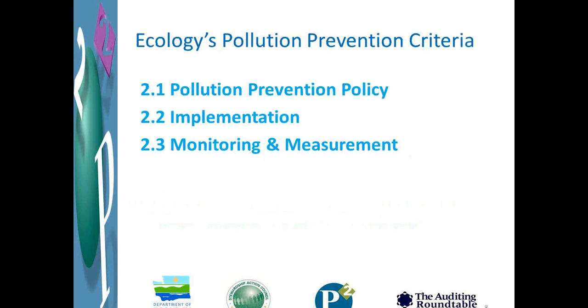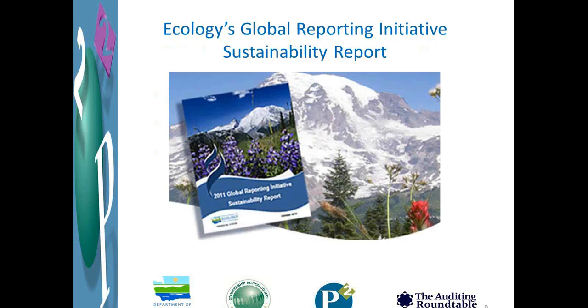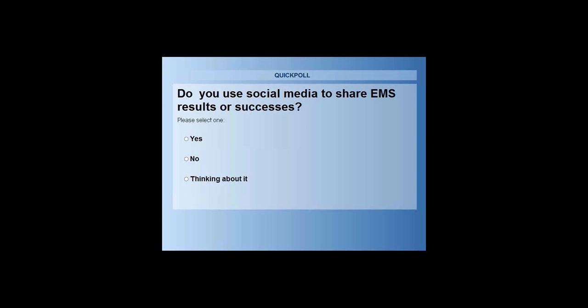This is a basic summary of our criteria when looking at environmental management systems — the three areas in terms of having a policy, addressing implementation, and then how you go about monitoring and measuring your program. Because we're talking about communications and engagement, one question for our quick poll is whether any organizations out there are starting to use social media to share EMS results or successes, whether through your own company, a tweet, Facebook, or other social media platforms.